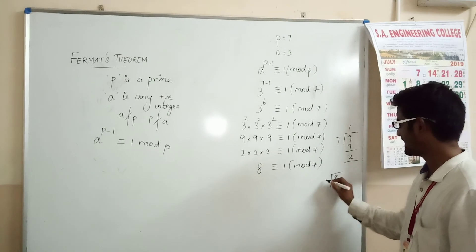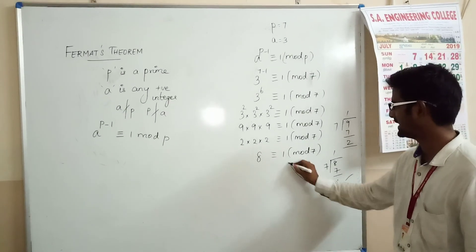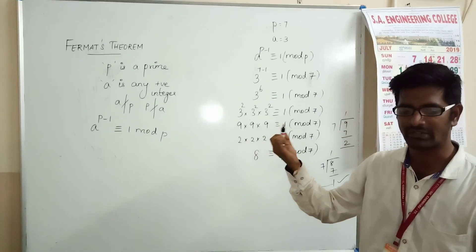Let's check. 8 when divided by 7: 7 goes 1 time and the remainder is 1. Yes, you get this remainder. Hence, Fermat's theorem holds true.